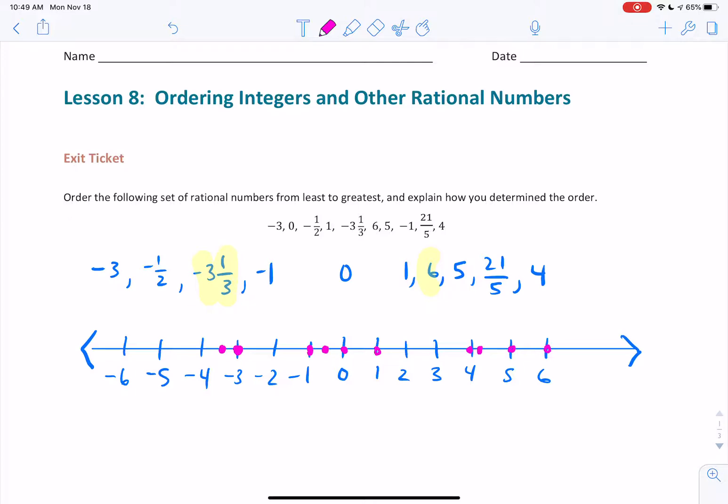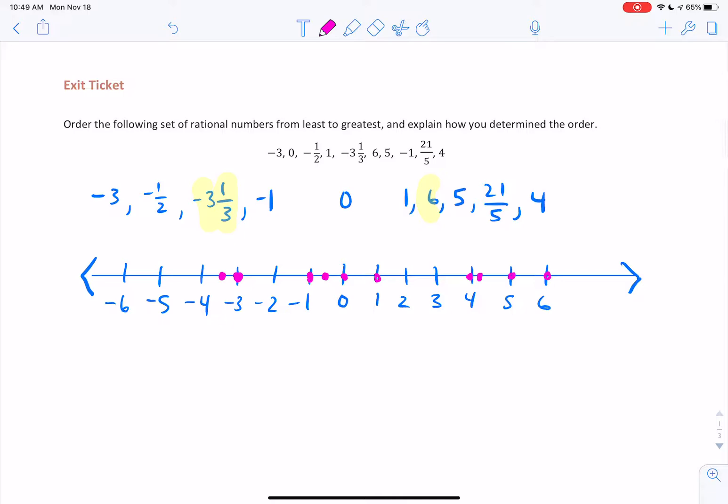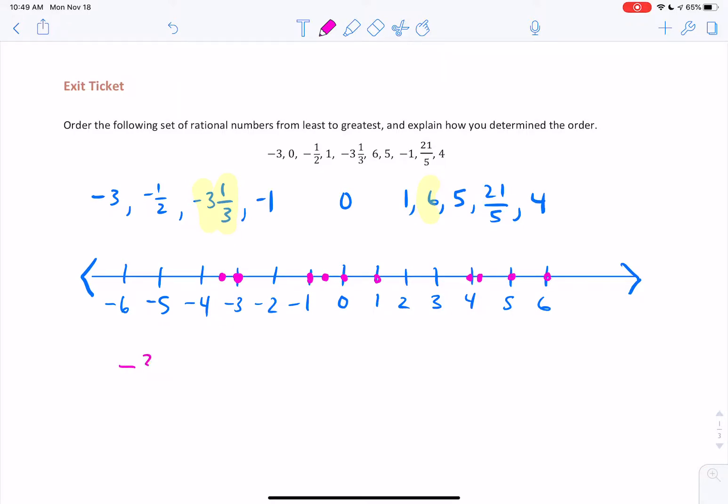Now I just got to place these numbers in order using the inequality symbols. Starting with negative 3 and 1 third, which is less than negative 3, which is less than negative 1. And let's keep going. And that's it. Easy as that.